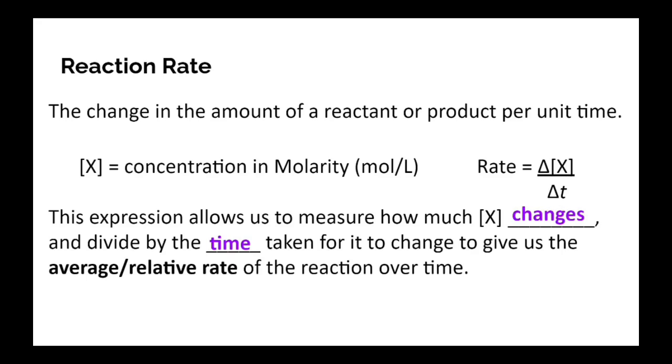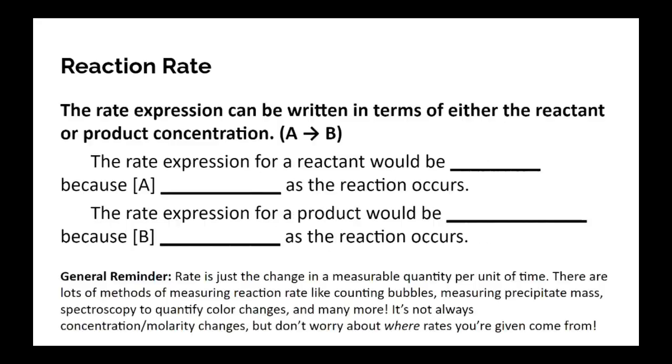Hopefully it's pretty straightforward, even if you're just starting physics this year. Now, the rate expression can be written either in terms of a reactant or a product. If we take a very simple reaction where A is turning into B, the rate expression for a reactant like A would always be a negative value, a negative rate, because that A concentration is decreasing as the reaction occurs. The A is being used up. It's turning into B. Similarly, the rate expression for a product is always going to be a positive value because B and any other products are being produced. So the concentration is going to increase as the reaction occurs.